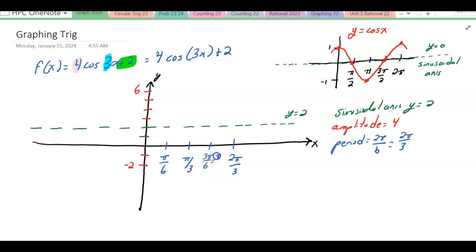I'm also going to mark that in the negative direction. So negative 2 pi over 3, negative pi over 2, negative pi over 3, and negative pi over 6.